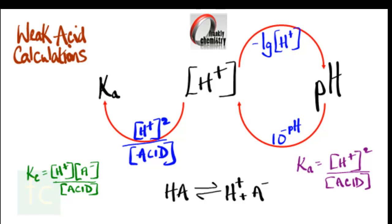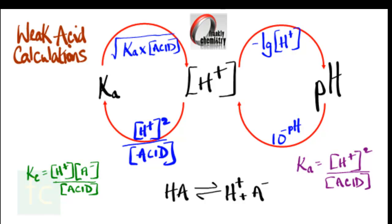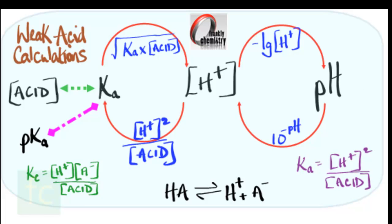Because the acid dissociates only very slightly, the concentration of the acid at equilibrium is taken to be simply the concentration of the acid initially. To get the concentration of hydrogen ions from the Ka value, it's the square root of Ka times the concentration of the acid — derived by rearranging the Ka equation. When you have both Ka and the concentration of hydrogen ions, you can also obtain the concentration of the acid by rearranging that equation.